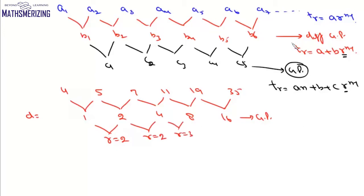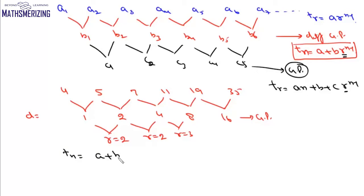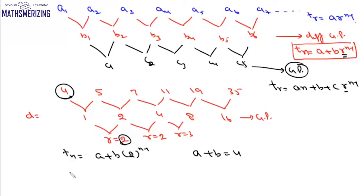Since the difference is in GP, the general term is t_n = a plus b·r to the power n minus 1. Here r is 2, so t_n = a plus b·2 to the power n minus 1. Putting n = 1, we get a plus b equals the first term, which is 4.